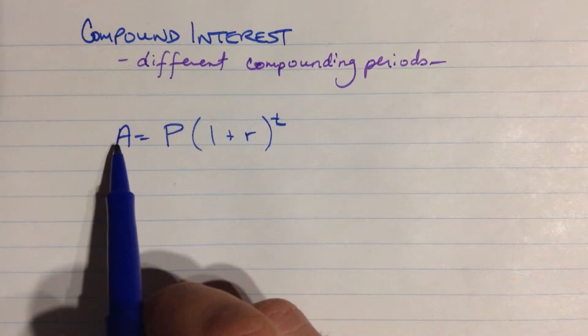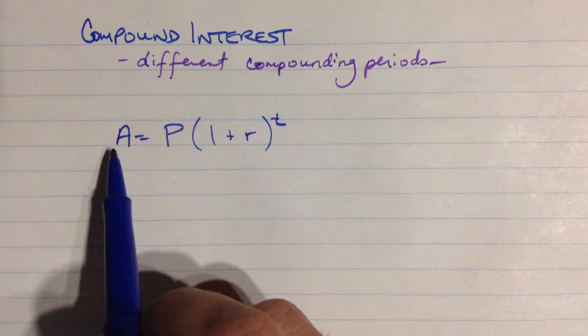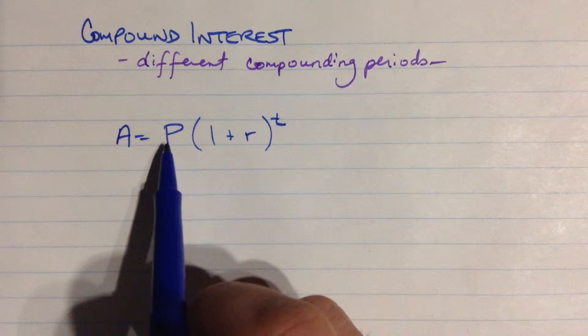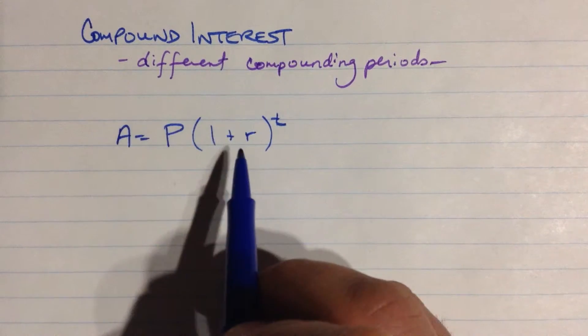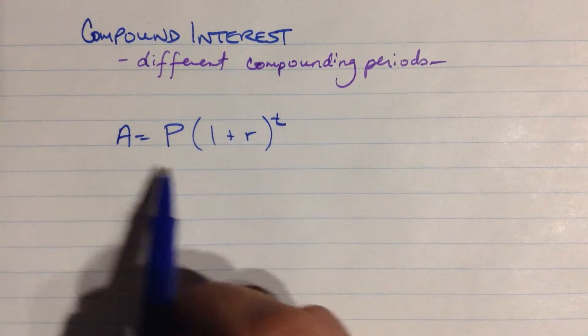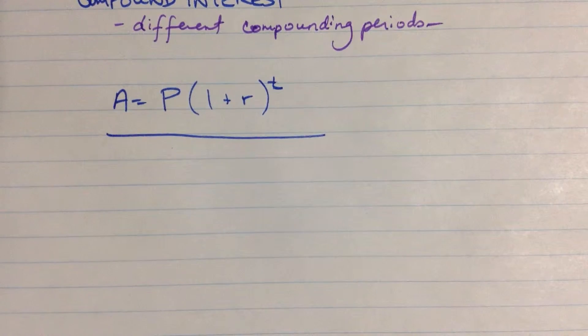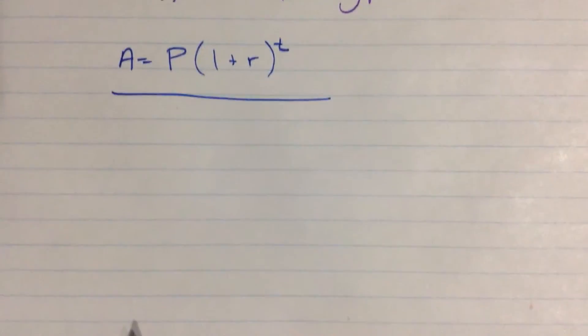So future value or the amount at the end when all the compounding is finished, the principal or the present value, the rate of interest and the number of years. But that's when everything is all just in years. You compound every year and you earn an annual amount of interest.